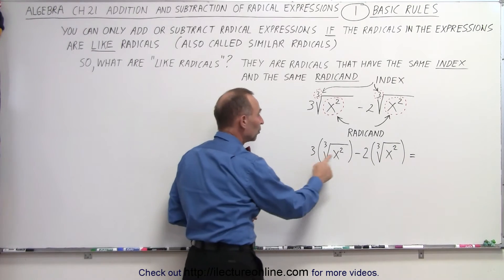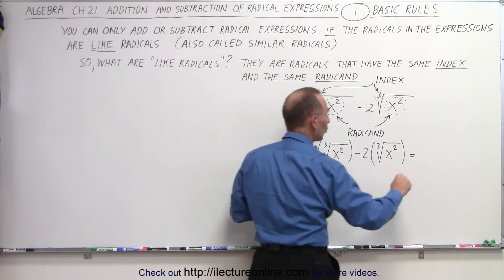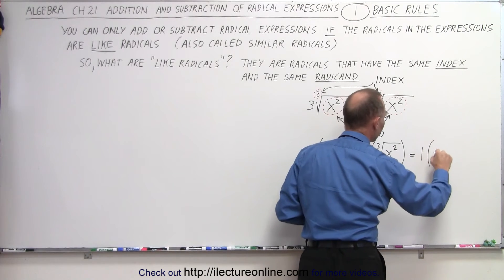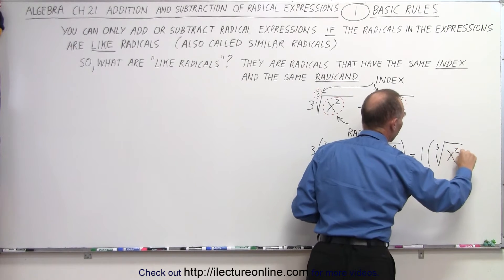And so if we have three of them and we subtract two of them, you end up with just one of those. So we have one of the cube root of x squared.